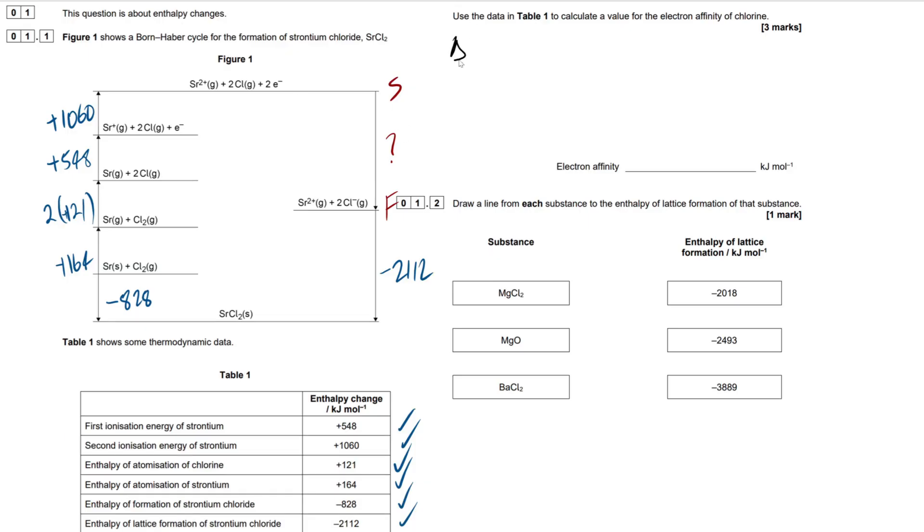So, I'm going to say right here, enthalpy of electron affinity of our chloride ion is going to be starting here. So, we're going to start here. We're going to go against this arrow. If you're not too aware, most of you probably are. If you go against an arrow in an energy cycle, whether that's a Hess cycle, whatever it may be, Born-Haber, you're going to have to reverse the sign of that arrow. So, it's going to be minus 1060 as our first one. Against this arrow, minus 548. Against this arrow as well, minus 2 lots of 121. Against this arrow, minus 164. With this arrow this time. So, we're going to keep it as minus 828. And then, we're going against this arrow. So, it's going to be plus 2112.